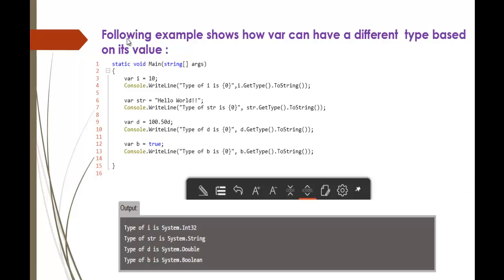Now we learned what is implicitly typed and explicitly typed. The following example shows how var can have a different type based on its value. For example, var i equals 10, and we print the type of this i variable using i.GetType().ToString(). Without wasting much time, let's jump into Visual Studio.